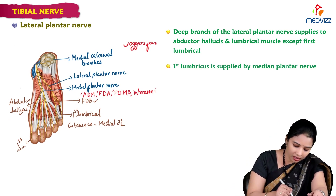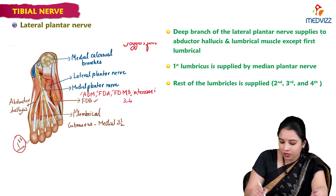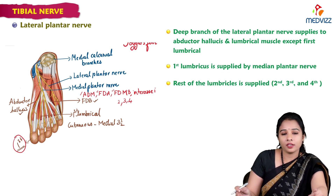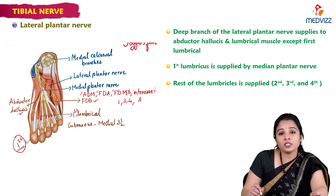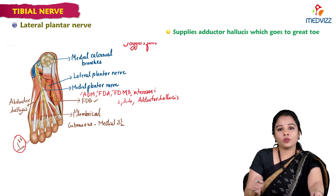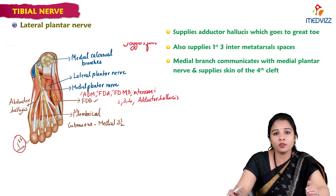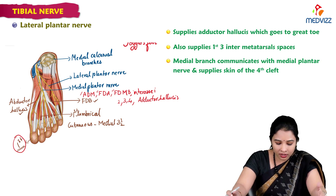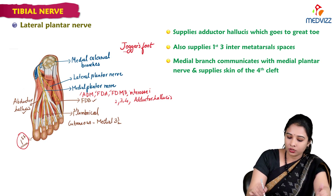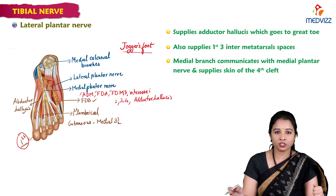The first lumbrical is supplied by the medial plantar nerve; the rest — second, third, and fourth lumbricals — and all the interossei are supplied by the lateral plantar nerve. It also supplies adductor hallucis and the first three inter-metatarsal spaces. The medial branch of the lateral plantar nerve communicates with the medial plantar nerve and supplies the skin of the fourth cleft. This completes the medial and lateral plantar nerves and the tibial nerve, covering its course and distribution of all branches.